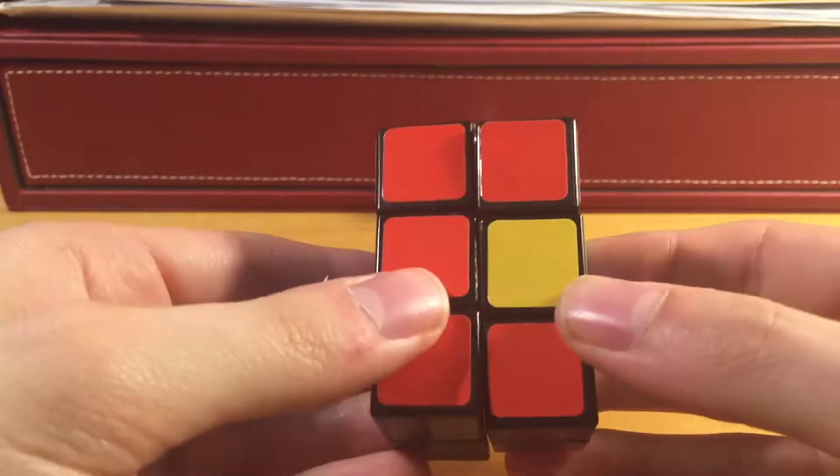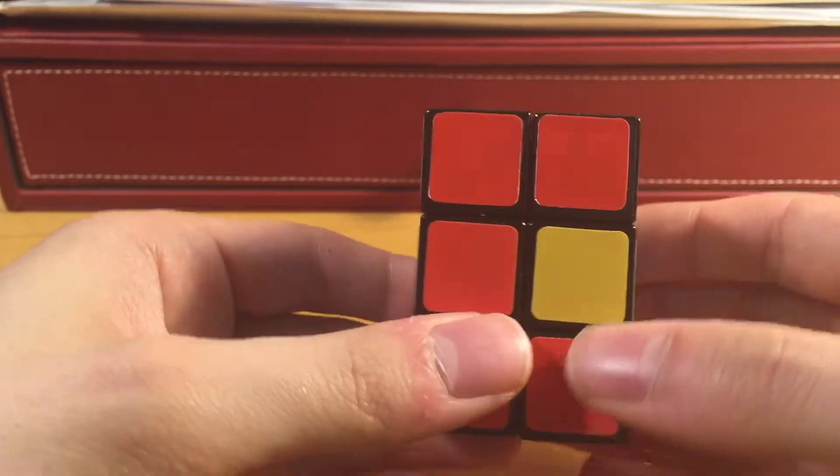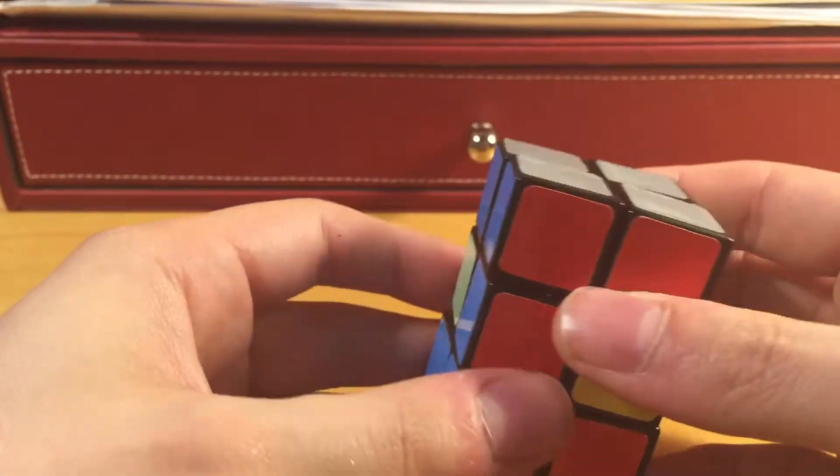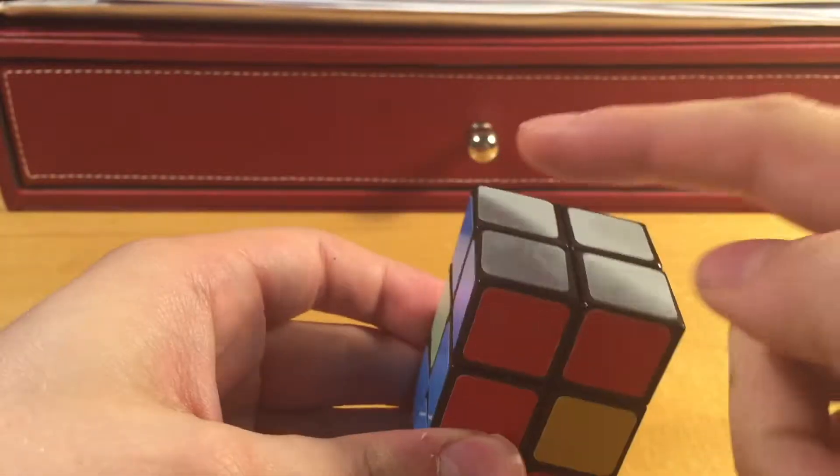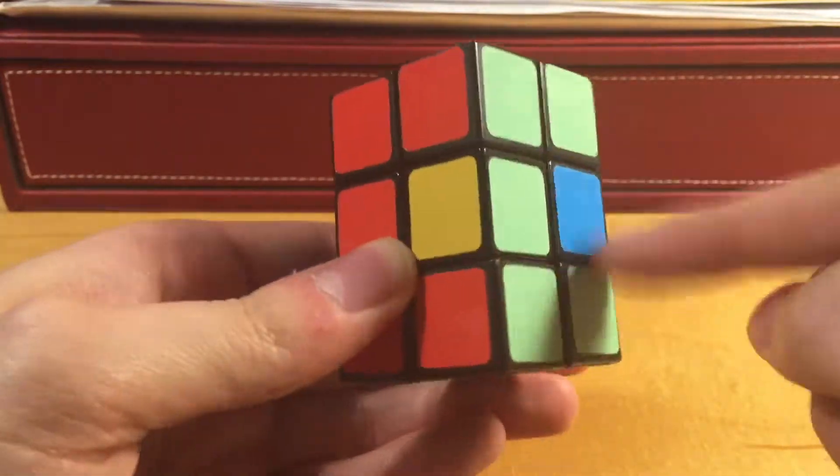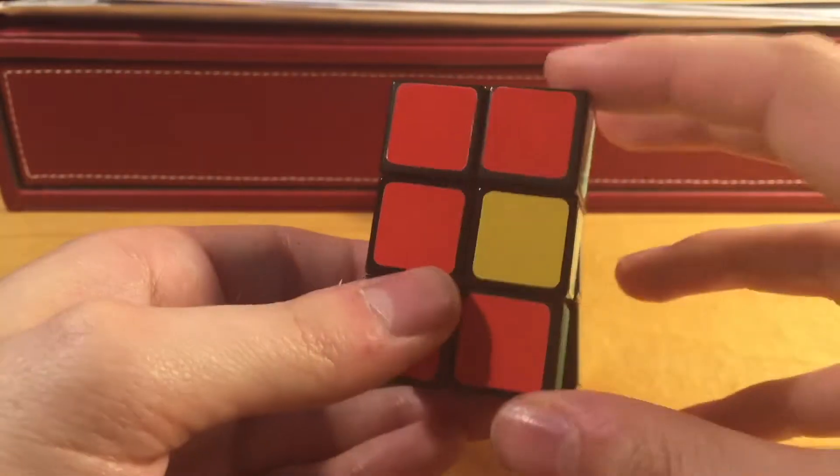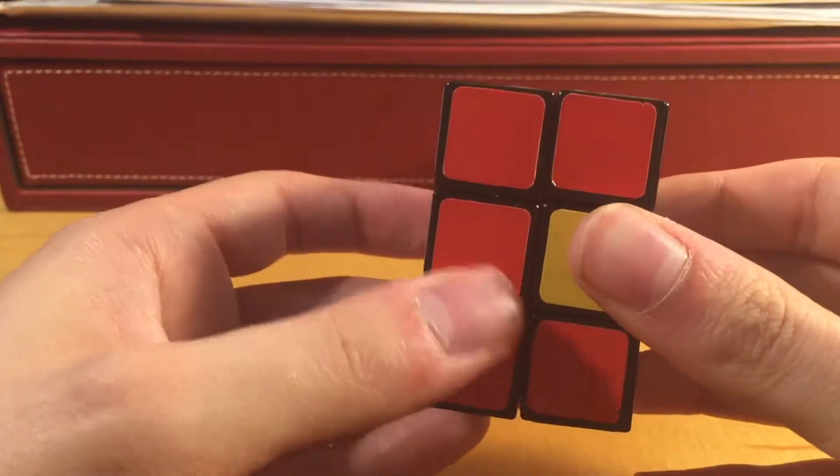All right, so I brought up one of the cases where you're going to have to solve the middle layer. So, you can see here that these three edges, and I'm talking about like this column, this column, and this column. So, these three edges here all need to be cycled.